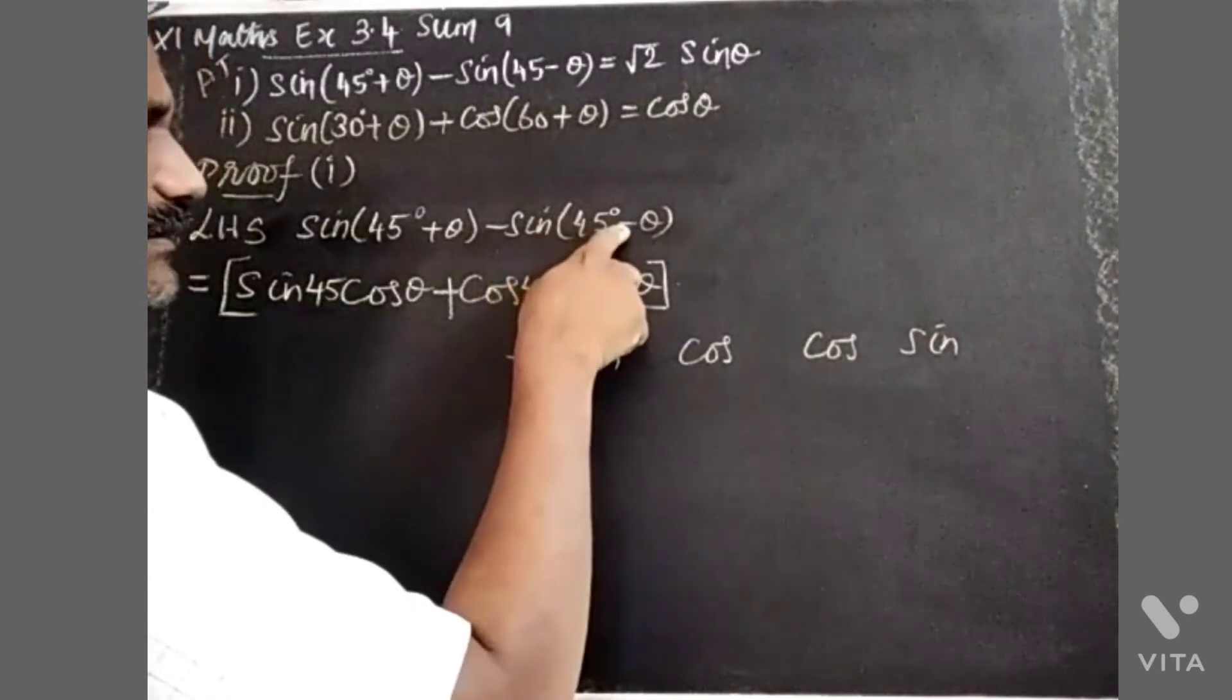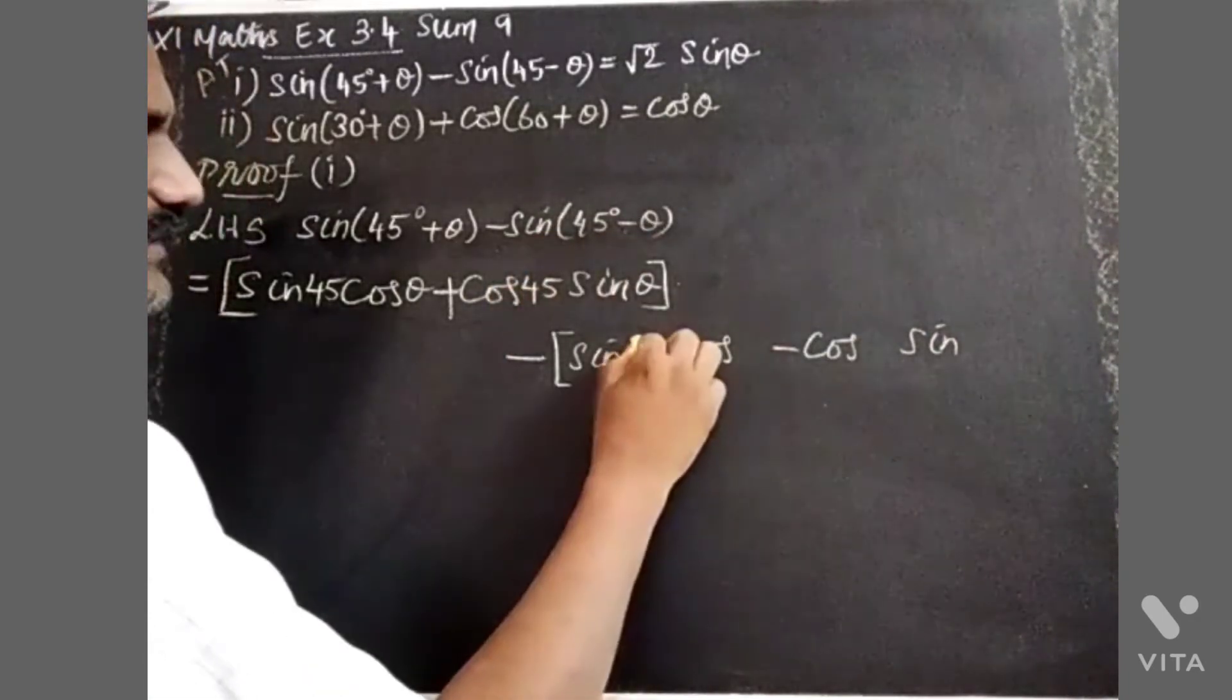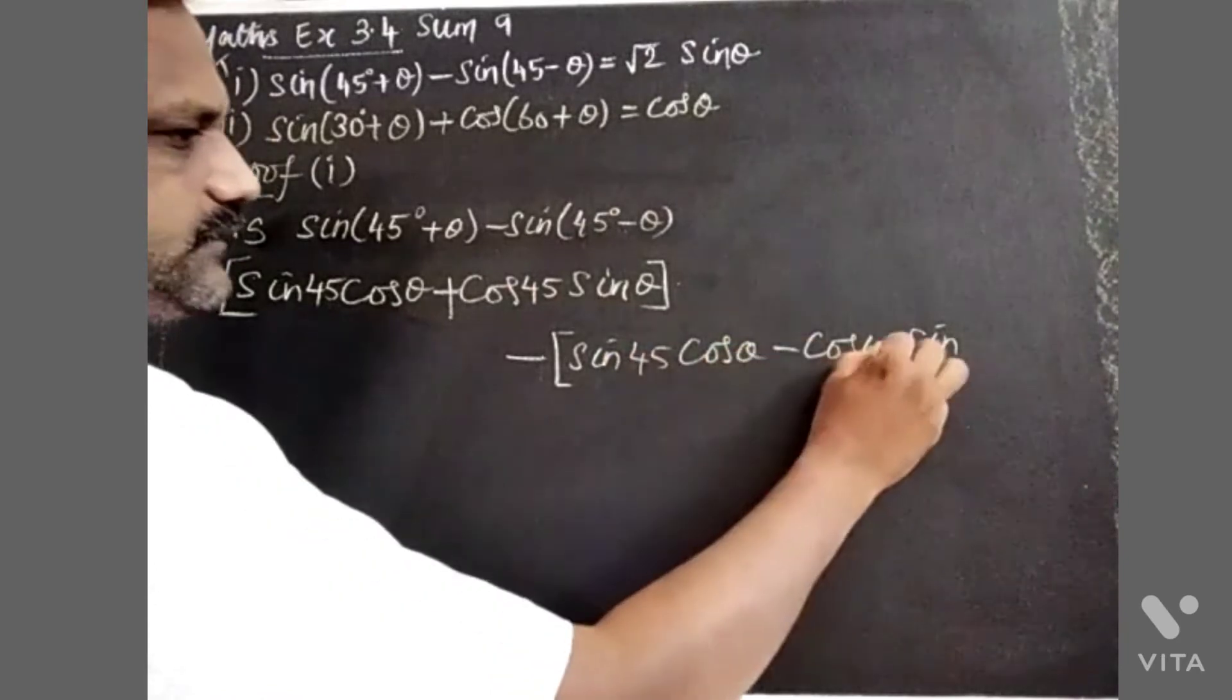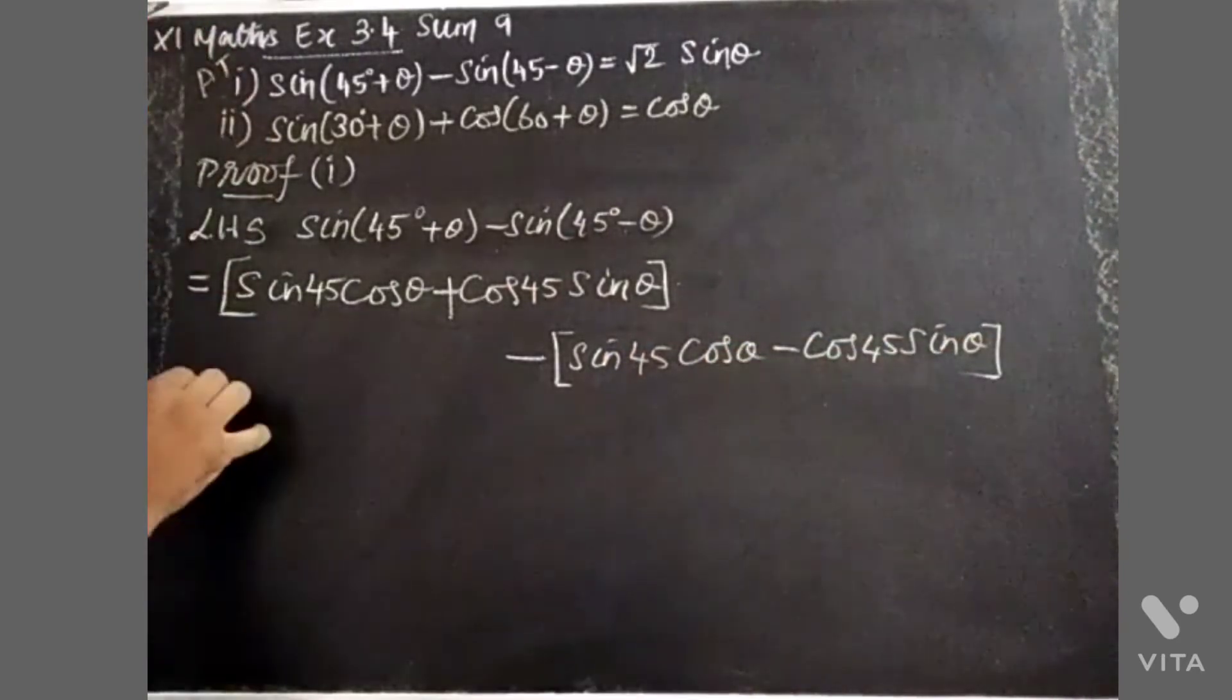Applying this formula: the first angle is 45, second angle is θ. For sin(45+θ), we have sin 45 times cos θ, then cos 45 times sin θ.